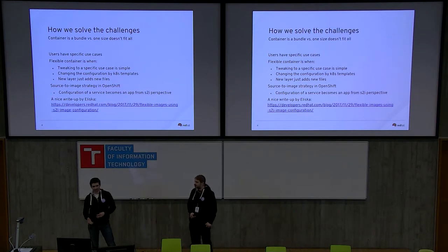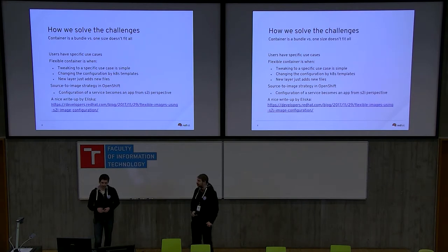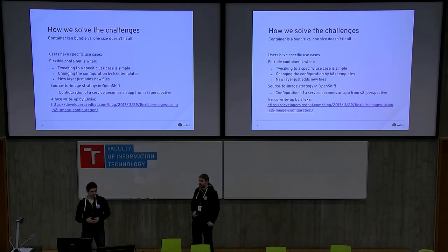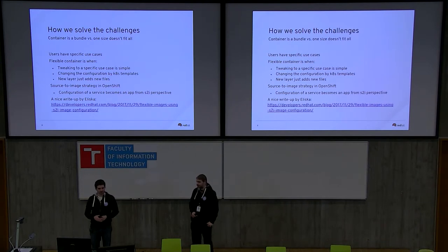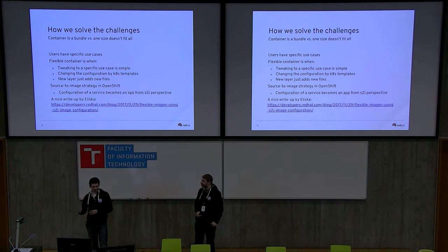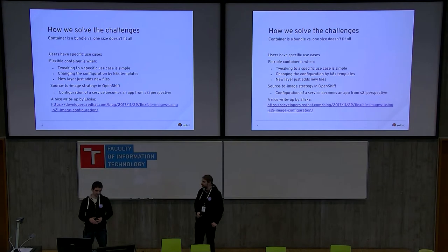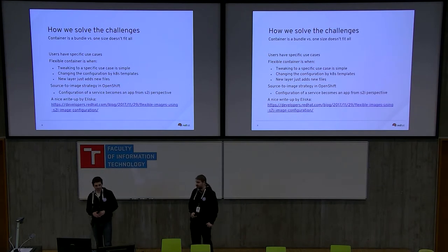We should also ensure the image can be extended, ideally without forking the whole source code. Ideally, a user who builds a thin layer on top of it would just add some new files. We can also think about the source-to-image strategy in OpenShift, which is very popular, and support this kind of extension. There is a nice write-up by Eliska about how to create a flexible container if you want to know more.